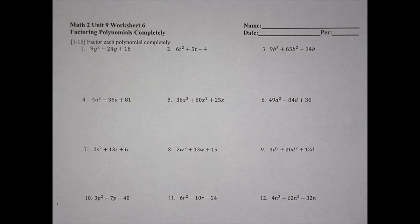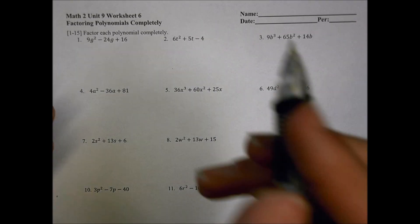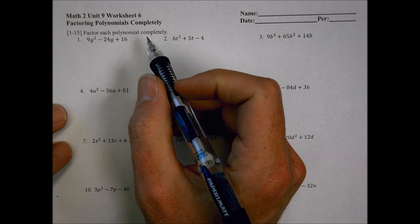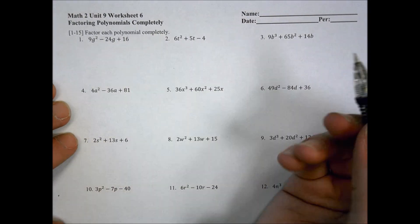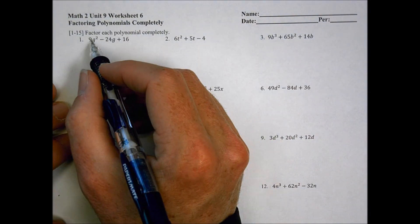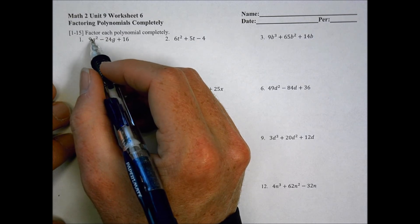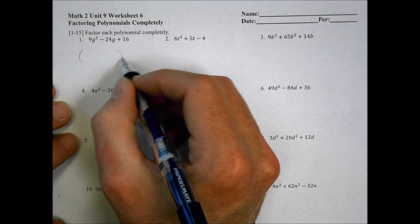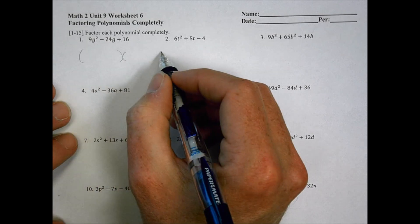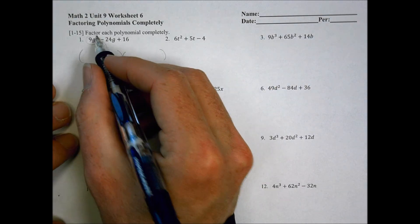This is Math 2 Unit 9 Worksheet Number 6, factoring polynomials completely. This is more practice working with factoring, except now the problems are going to get a little more complex than yesterday. The leading coefficient term might be another number that splits up a couple of ways, so it's going to be a little more complicated and may take more guess and check.